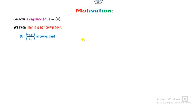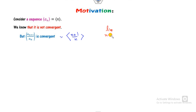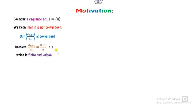On the other hand, if you find the sequence A_{N+1} upon A_N, then clearly this is convergent. Because if you take the limit as N approaches infinity, it goes to 1, which is finite and unique.